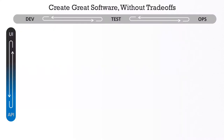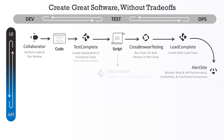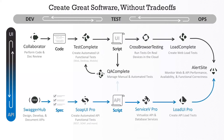A layout of those solutions: we have Collaborator for code and document review, TestComplete for automated UI functional testing, Cross Browser Testing lets you run tests on real devices from our lab in Memphis, AlertSite for web and API performance monitoring, SwaggerHub for designing and documenting APIs in a collaborative way, SoapUI Pro for automated API functional testing, and ServiceV for easy API mocking.